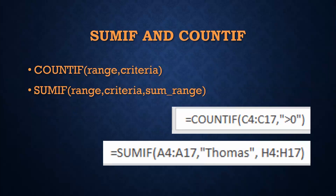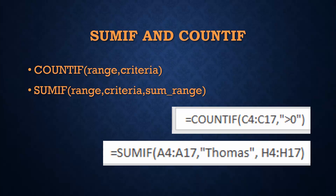We'll also play with COUNTIF and SUMIF. COUNTIF is going to tell you if there is something there — so if I want to know how many students are in my class, I can say COUNTIF, and as long as there is a name there, it will count them up. SUMIF is what we'll use when playing with pivot tables — it only adds if there's a certain condition. In this case, SUMIF A4 to A17: if it sees 'Thomas,' it goes to cells H4 through H17 and adds those up.